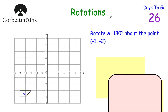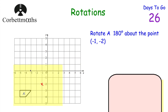Now we've got a grid with trapezium A, and we've been asked to rotate A 180 degrees about the point (-1, -2). I want you to pause now and think about how you'd do that. First, I'd plot the point (-1, -2) — that's the centre of rotation. Then I'd place the tracing paper on top, making sure it's landscape or portrait, and trace over both the centre of rotation and the trapezium.